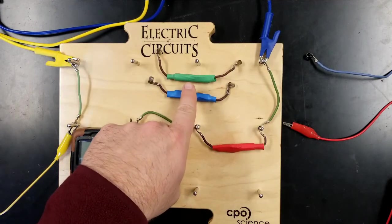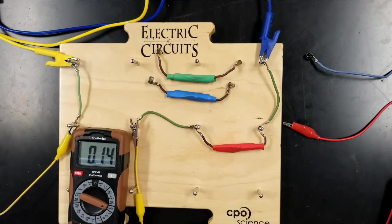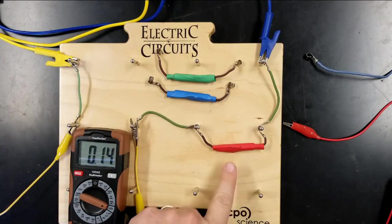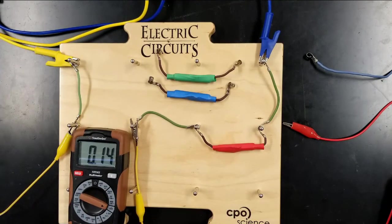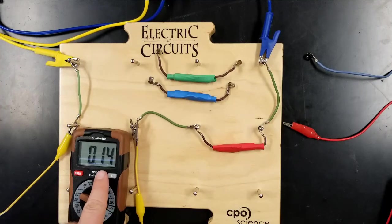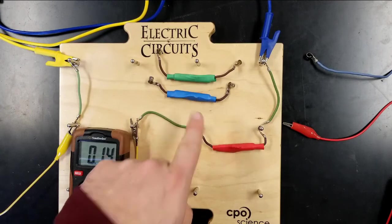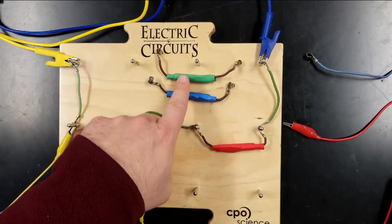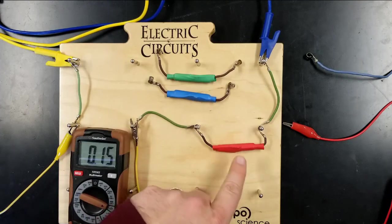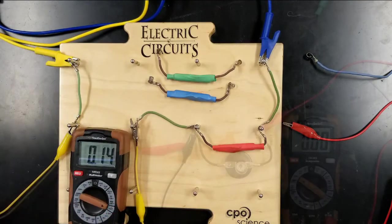We'll notice that the current is even smaller for the red resistor. The green resistors are relatively low resistance. They let charges pass through them very well. Whereas the red resistors have a high resistance. They do not let charges pass through them as well as the green resistors, and the blue are somewhere in the middle. So low resistance, medium resistance, relatively high resistance.